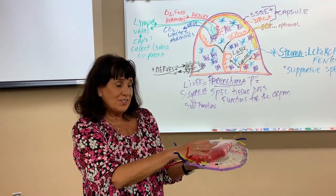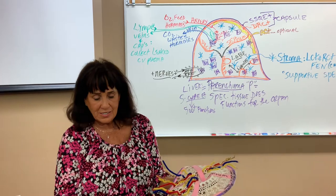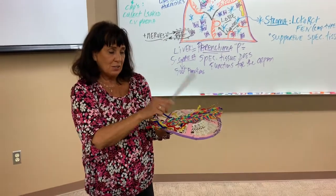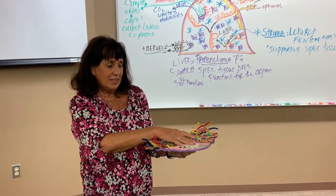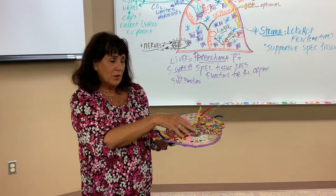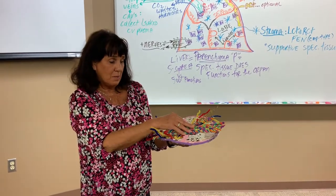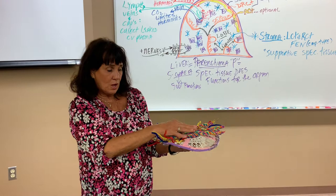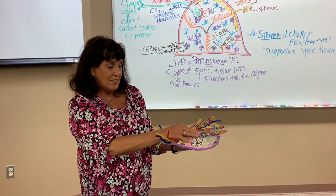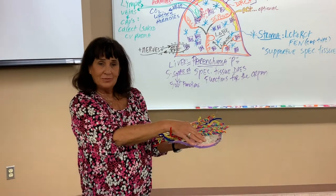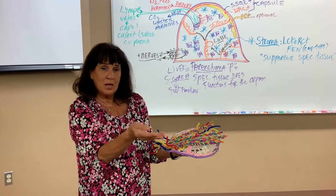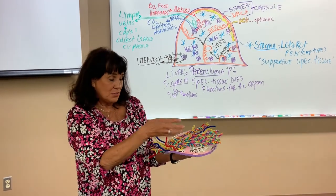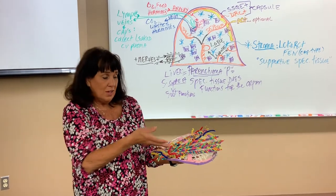If instead of liver we did this with skeletal muscle — here are some skeletal muscle cells — do they have a capsule around them? Sure they do. We called it epimysium when we learned muscle tissue. The septa would be like perimysium running in between the muscle cells. And the endomysium would be the loose CT. So we can actually rename things depending upon what organ we're talking about — that's just the way anatomy does things, but it's the exact same structure, just different names.